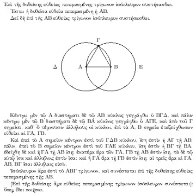The earliest civilization on the Indian subcontinent is the Indus Valley Civilization Mature Phase, 2600–1900 BC, that flourished in the Indus River Basin. Their cities were laid out with geometric regularity, but no known mathematical documents survive from this civilization.